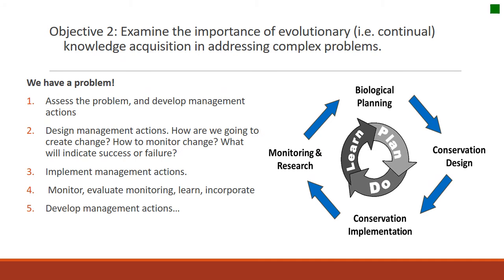Here we're looking at one version of the adaptive management loop or wheel, the one used in Chad and Tony's paper. It emphasizes learning, planning, implementing, and learning again. The primary concept driving pretty much any version of this adaptive management wheel is that it's cyclic — what is learned is incorporated into our management plans, we then implement and monitor what has been planned, and then our monitoring is evaluated, learned from, and incorporated back into our planning. It repeats itself over and over again.